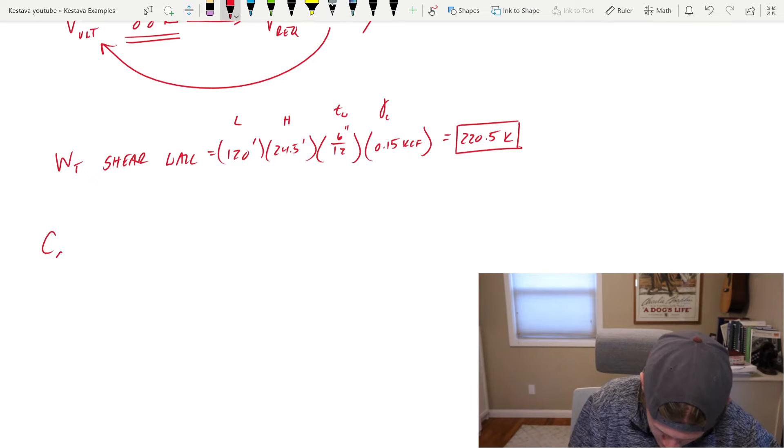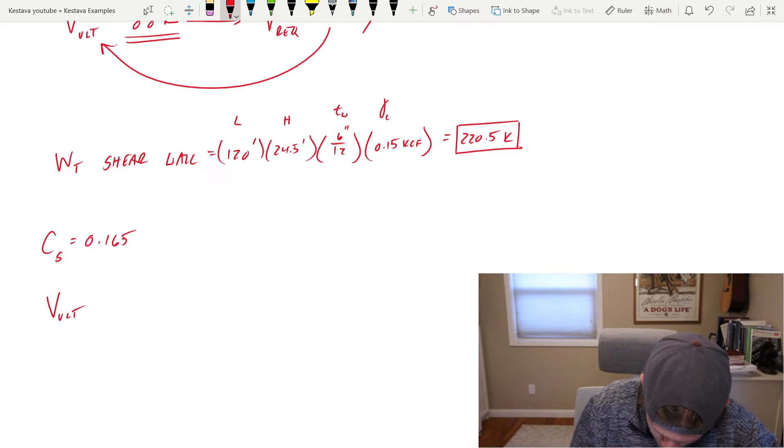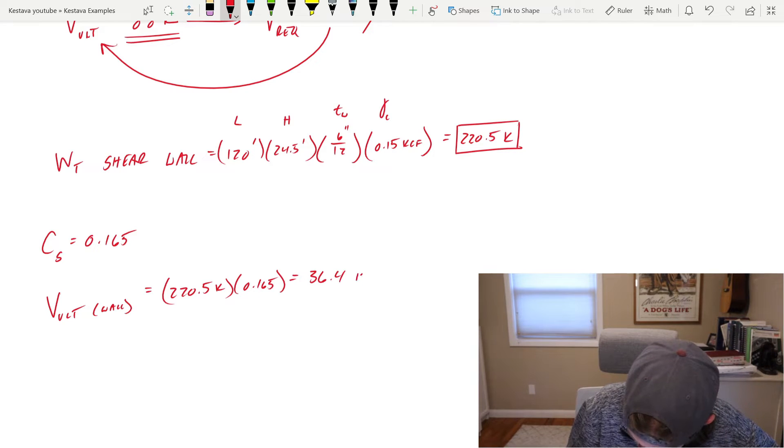That comes out to 220.5 additional kips of seismic mass. And from previous, our C sub S is equal to 0.165, which means that our additional Vult of the wall itself is equal to 220.5 kips times 0.165, which gets us 36.4 kips of additional demand.